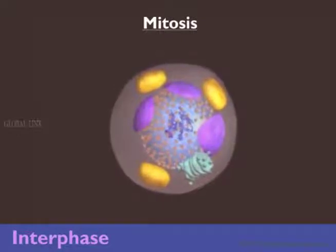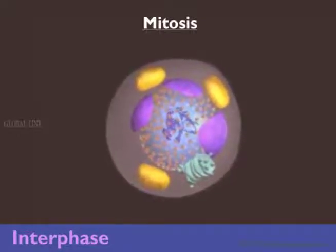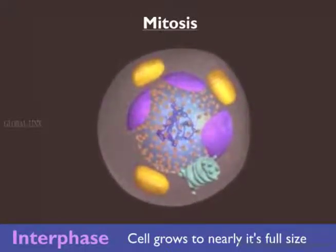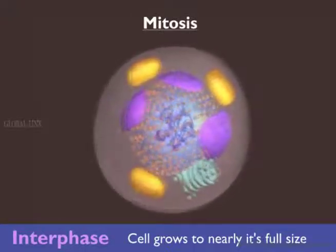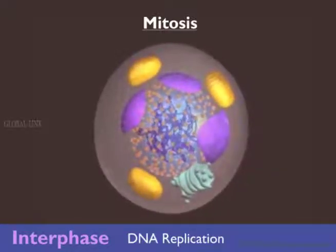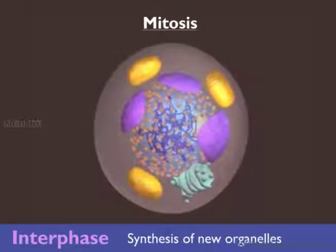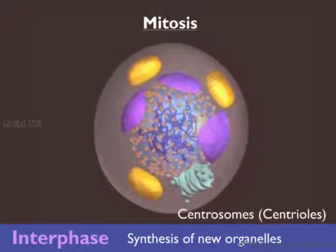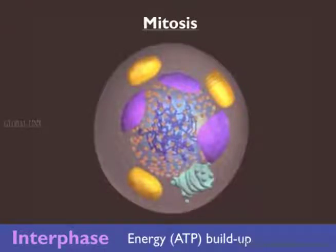Interphase is the preparation stage for division. During this stage, the cell grows into nearly its full size and performs all its biochemical activities as usual. The cell also replicates its DNA so that we have sister chromatids. At this point, they are not visible by a light microscope. The cell also synthesizes new organelles like mitochondria, ER, Golgi bodies, and importantly, centrosomes in animal cells. It also builds up sufficient energy in the form of ATP.